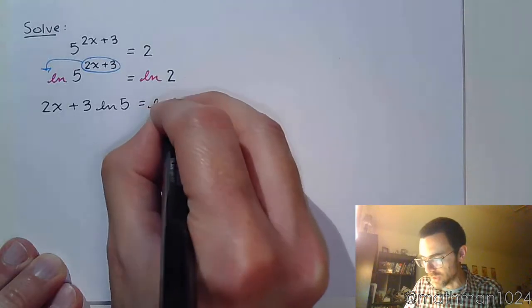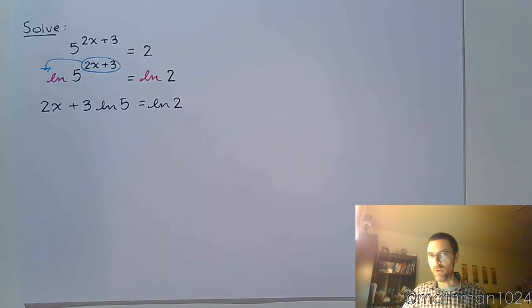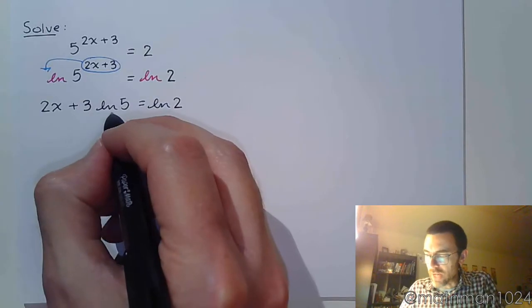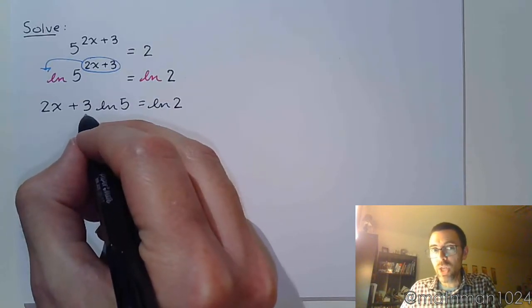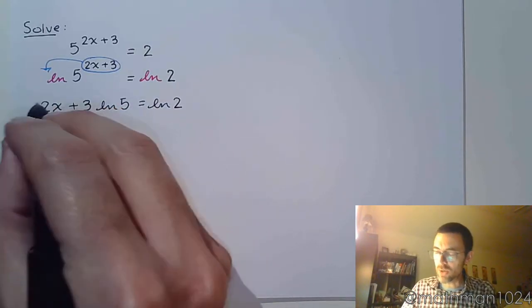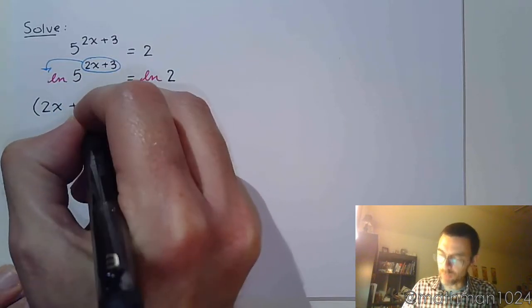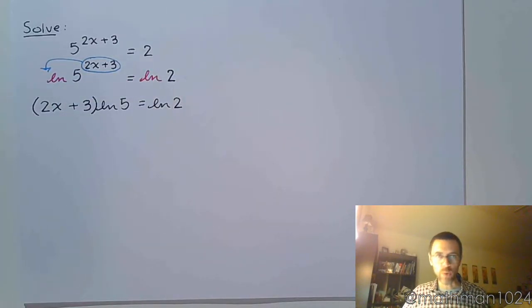They'll say 2x plus 3 natural log of 5 equals natural log of 2. Now, if you do this, this is very, very bad. Because it only looks like the natural log of 5 is connected to the 3 when it should be connected to the entire group. So we need to use parentheses like that. And now we're going to be okay.